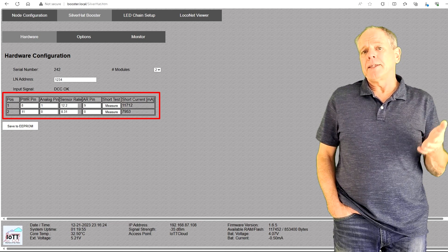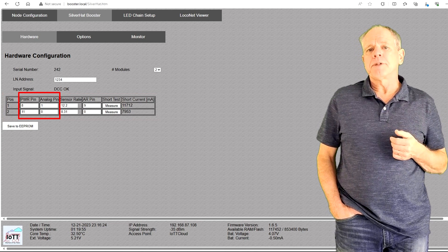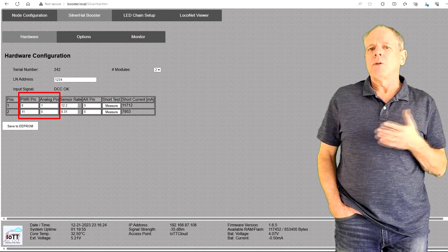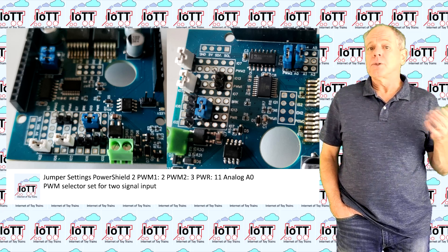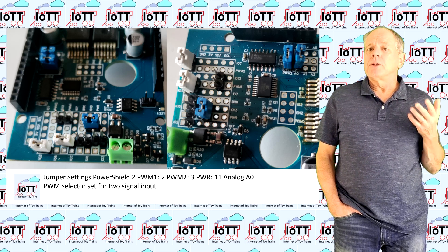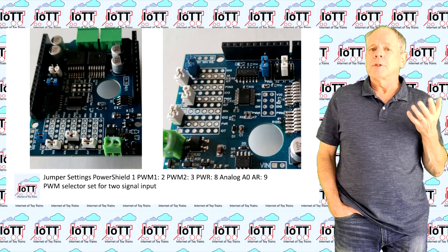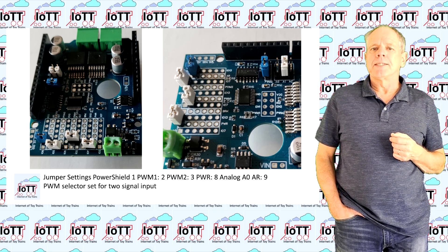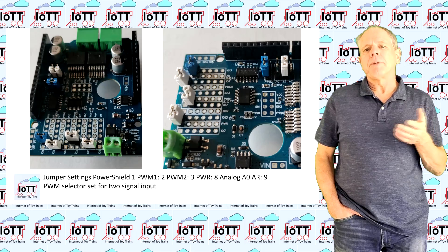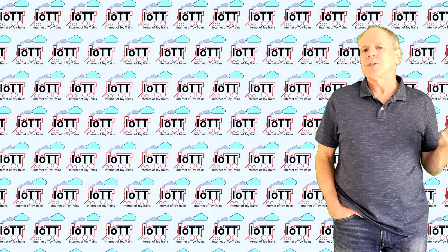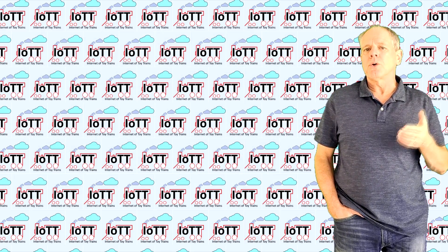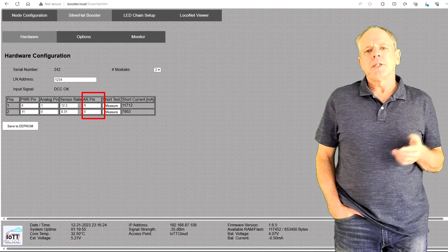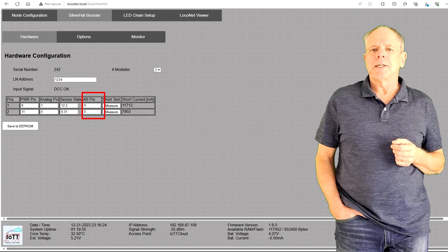For each booster, you now enter the IOPins according to the physical PowerShield settings. The DCC input must always be on pins 2 and 3, so there is nothing to configure here, but you must specify the pin number of the power pin and the analog pin used for current sensing. Note that all configuration can be done in the screen dialog. There is no need to change the source code of the Arduino program.